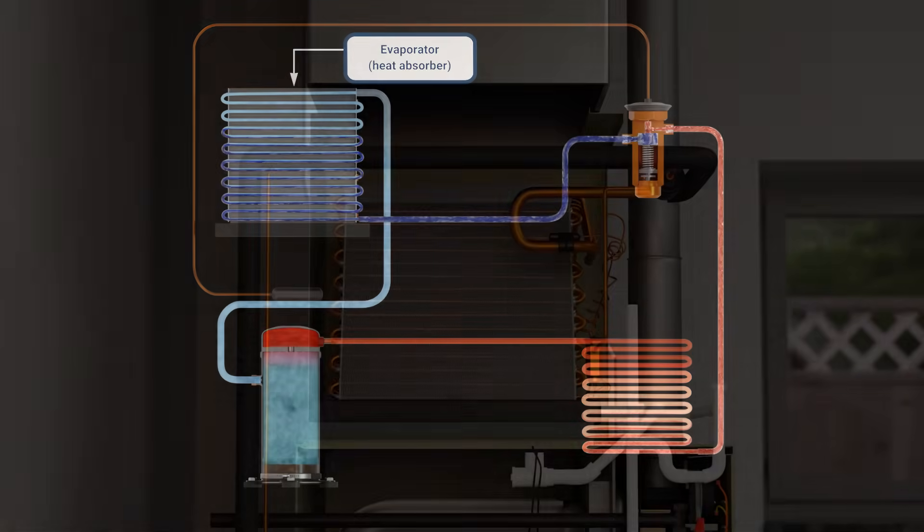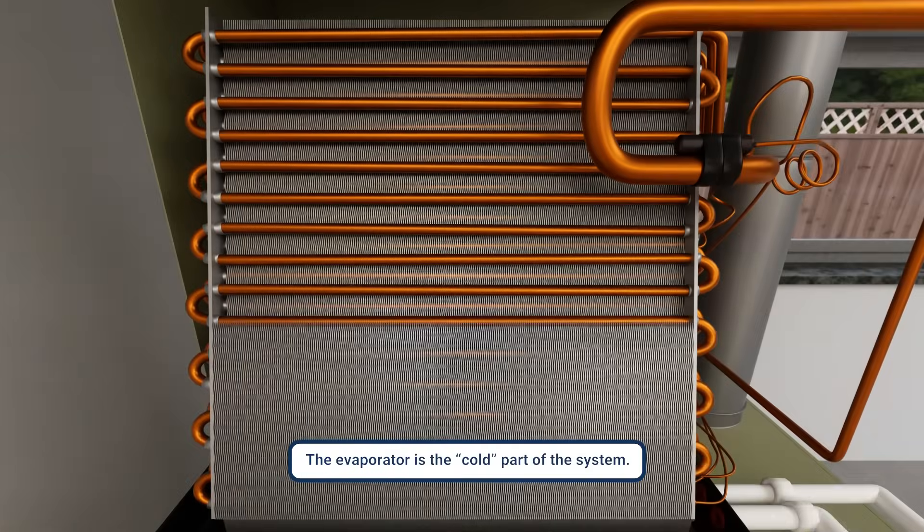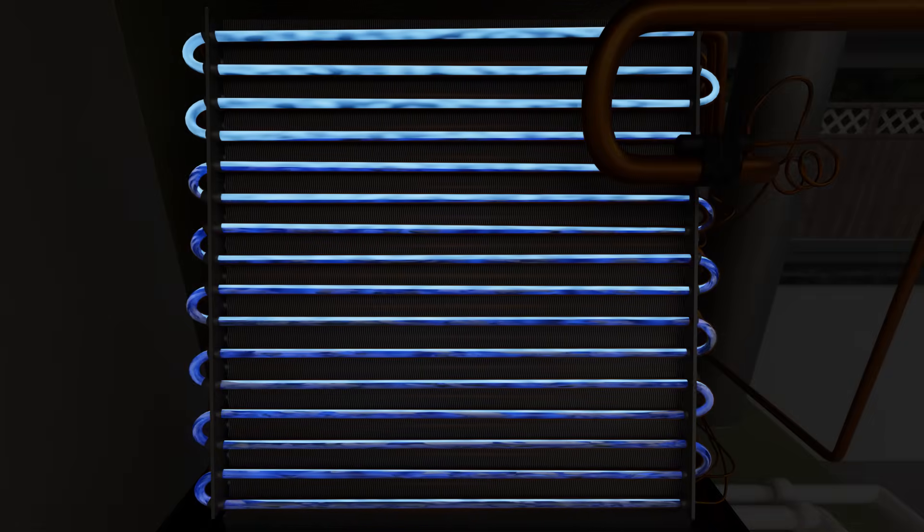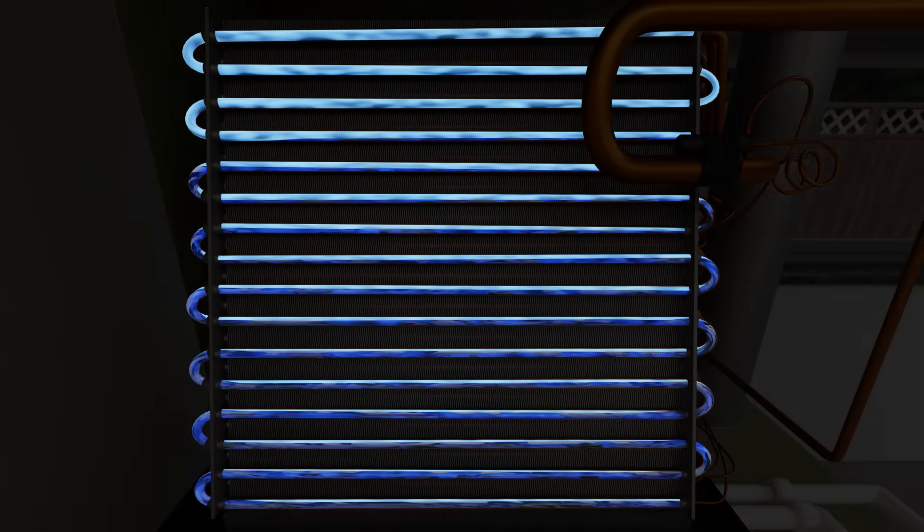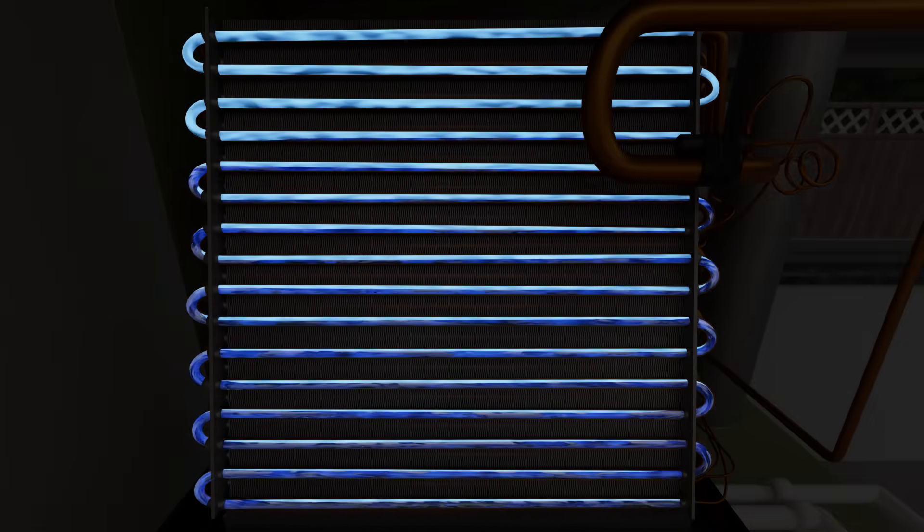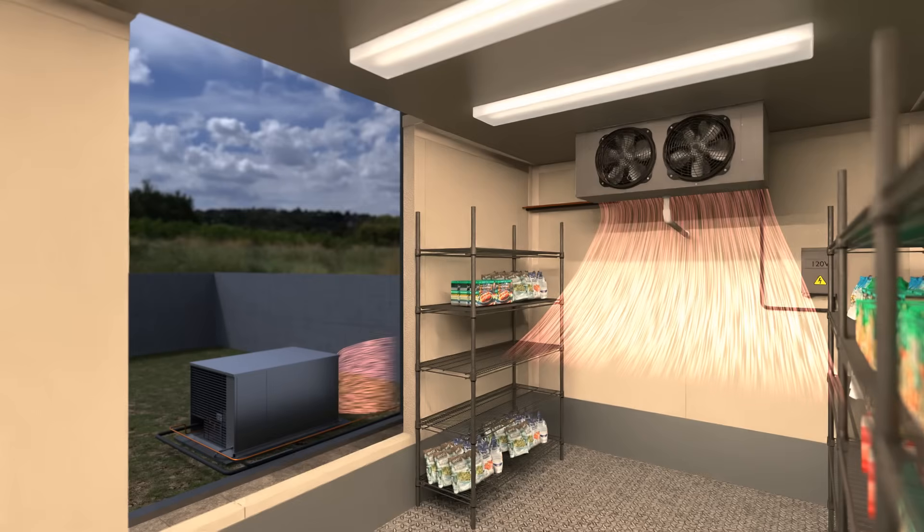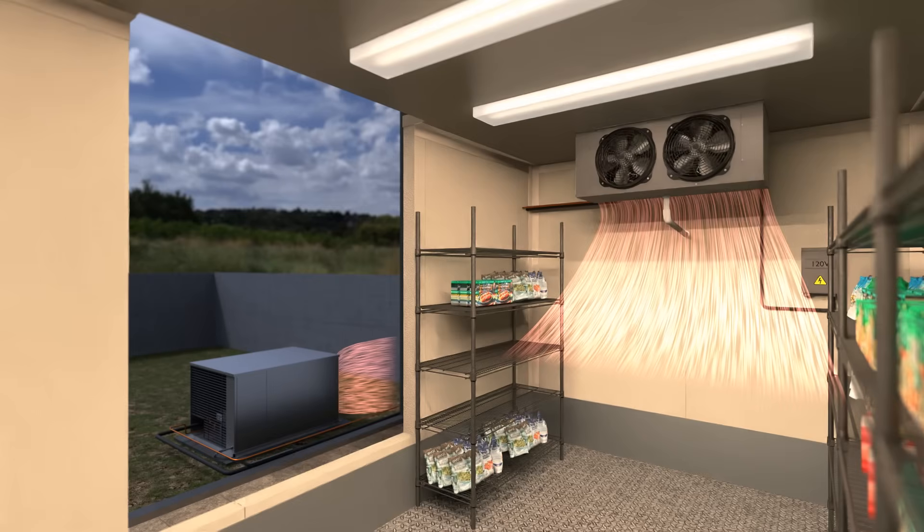Next is the evaporator, which is the cold part of the system, where the real magic happens. Here, the cold refrigerant absorbs heat from the environment, which is the indoor air in AC, or the heat from inside the freezer or refrigerator in refrigeration.